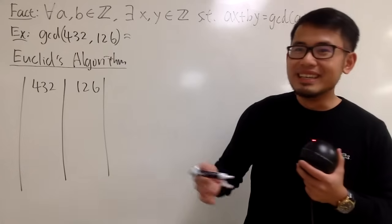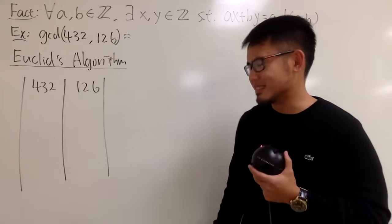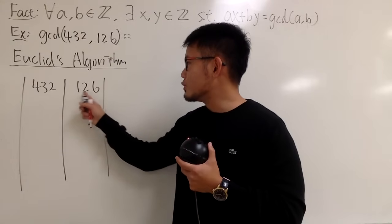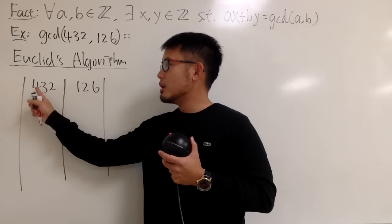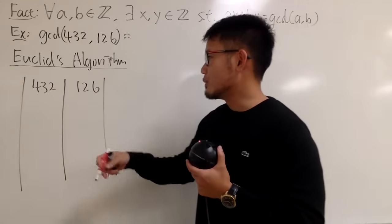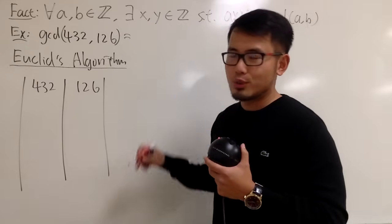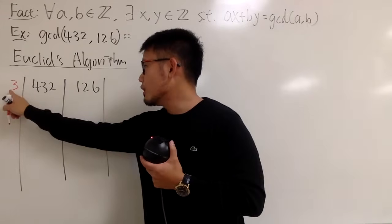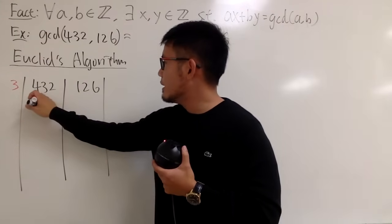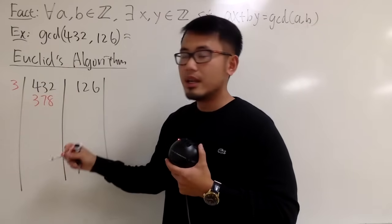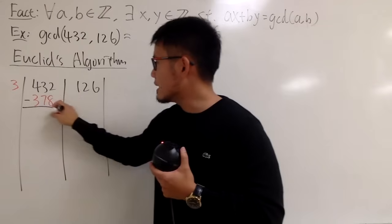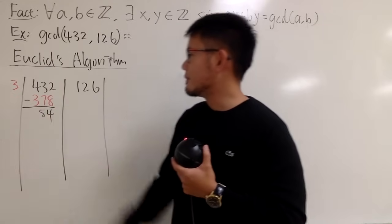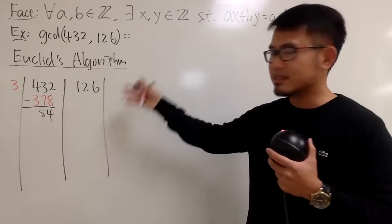At the end of the day, we're dividing one number into the other. First, we ask: how many times does 126 go into 432? You can divide however you like. The answer is 3, because 3 times 126 is 378. So we subtract: 432 minus 378 gives us 54. It's just like long division, organized in this way.